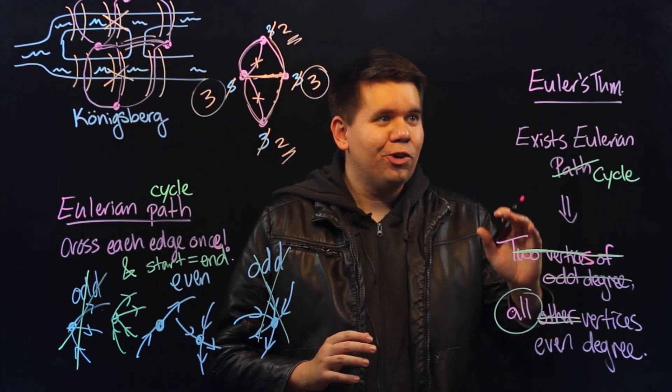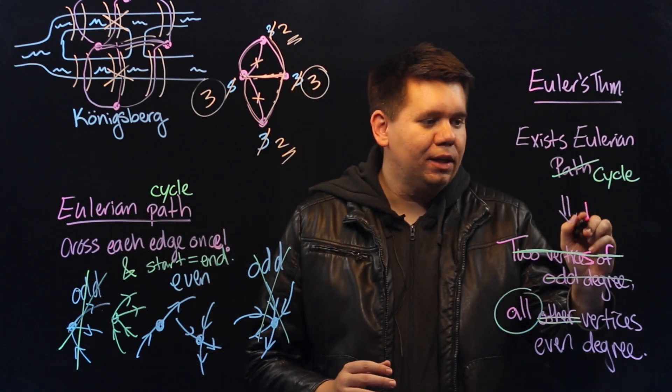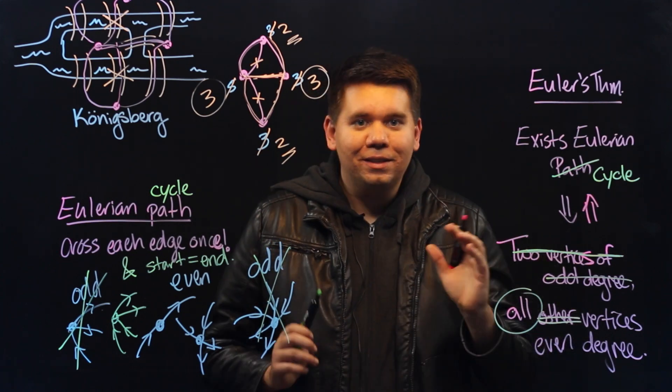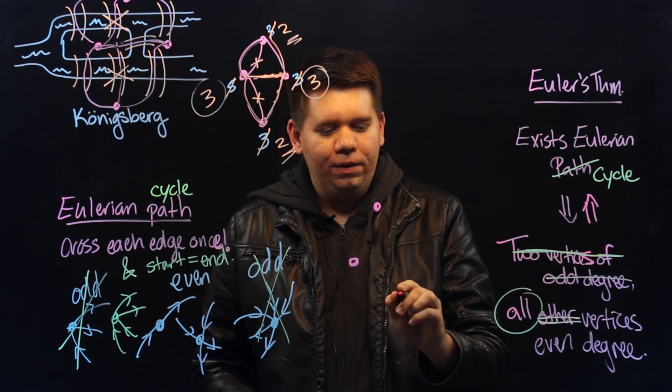In fact, Euler's theorem states something stronger. It's that the converse is also true. In the case of cycles, whenever you have some graph where all of the vertices have even degree,